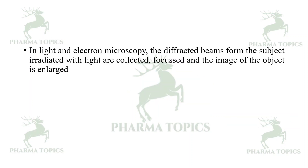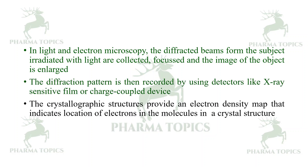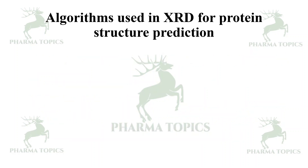In light and electron microscopy, the diffracted beams from the subject irradiated with light are collected, focused, and the image of the object is enlarged. The diffraction pattern is recorded using detectors like X-ray sensitive film or charge coupled devices. The crystallographic structures provide an electron density map that indicates the location of electrons in the molecules in a crystal structure.